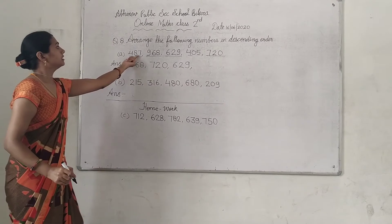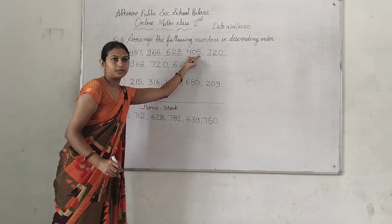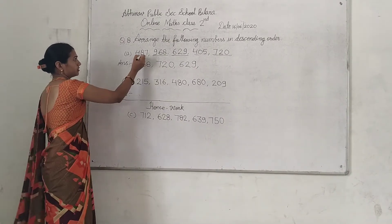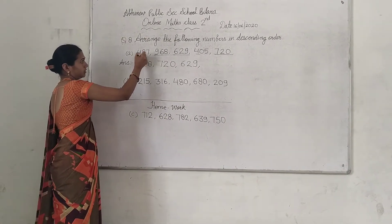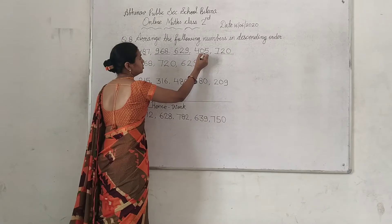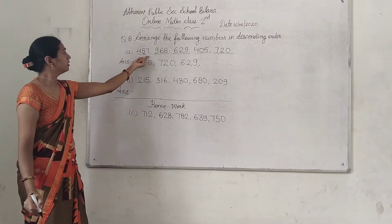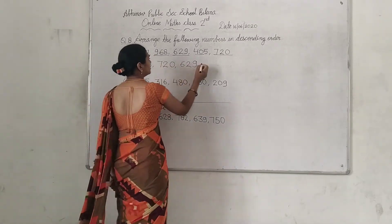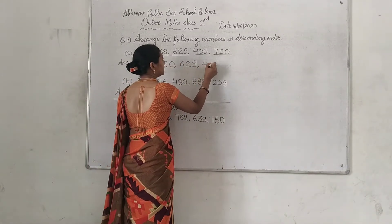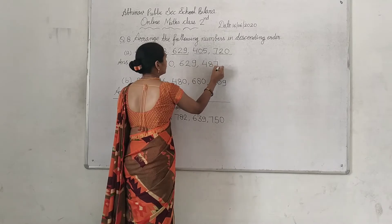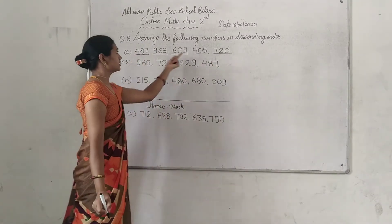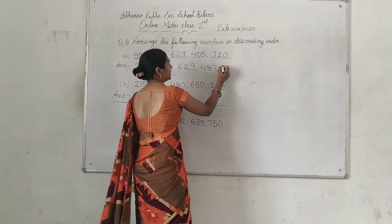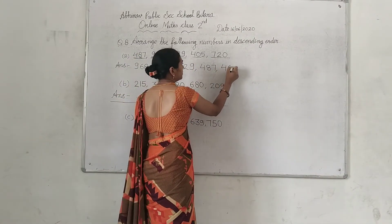Now comparing 400 and 400 — same hundreds place. We look at the tens position: 8 and 0. The biggest number is 487. You will write 487 here, and then the smallest number 405.